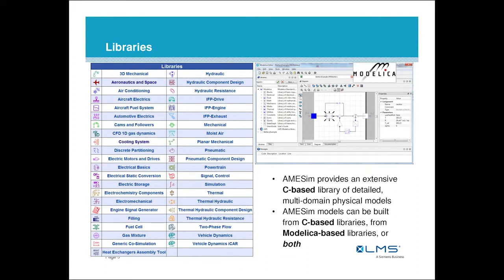The libraries - there's more than a few. All the things on the left are the C-based libraries that are part of the tool. We have everything in the auto sector, the aerospace domains are coming in. We have electrical and chemical, thermal, hydraulics - I think hydraulics are kind of what we're known most for. These libraries are validated and used in industrial applications quite heavily. We have a strong expertise in building up libraries of C-based models.